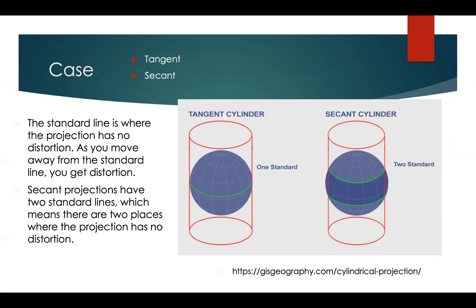Where the surface touches the globe, there's no distortion. In a tangent projection, there's one standard line. That's where you have no distortion. And in a secant projection, where the surface goes through the globe, there are two standard lines. As you move away from the standard line or lines, you get more distortion.